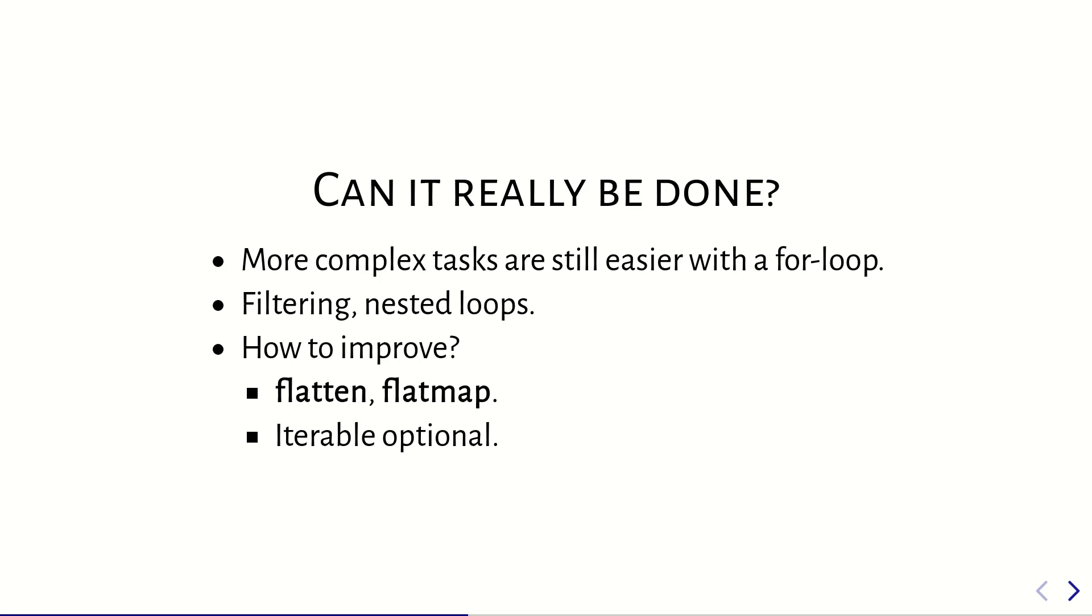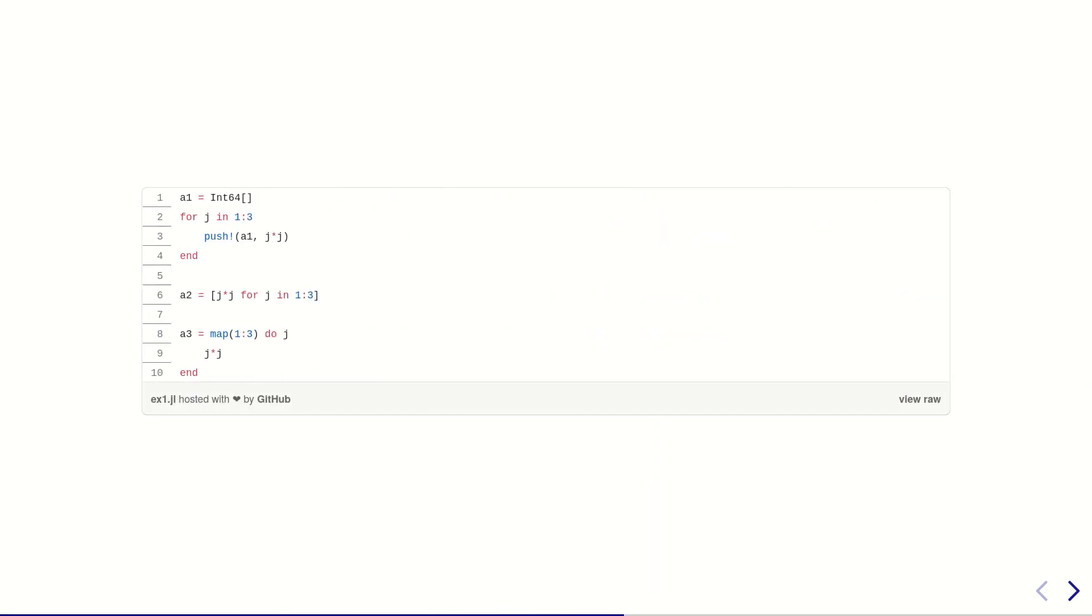And then I was thinking, how can I actually improve on this? Based actually on my experience with functional programming, I noticed that just by having access to flatten and flat map functions, this would solve a lot of problems. And another source of problems is the fact that we don't have a default optional class that's iterable in Julia. So that's one thing that would help also. So to illustrate a bit what I'm trying to do...